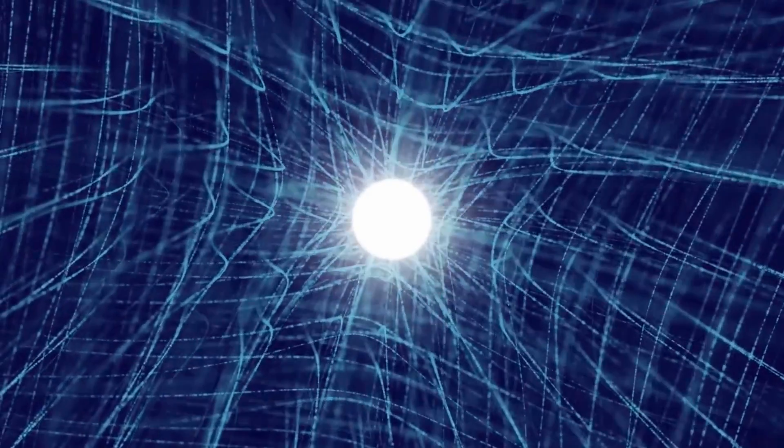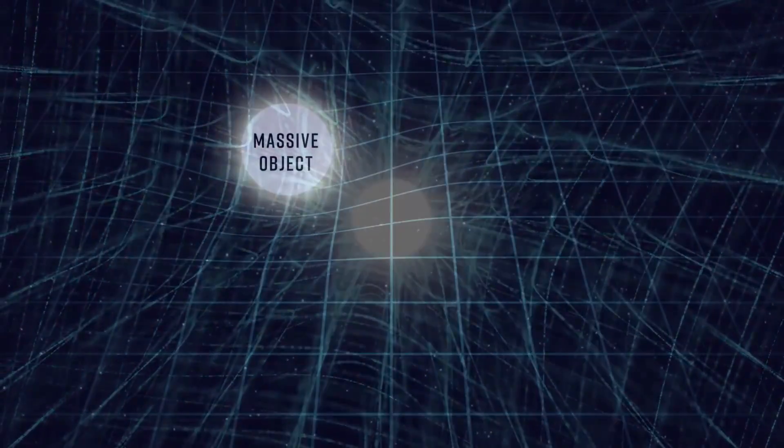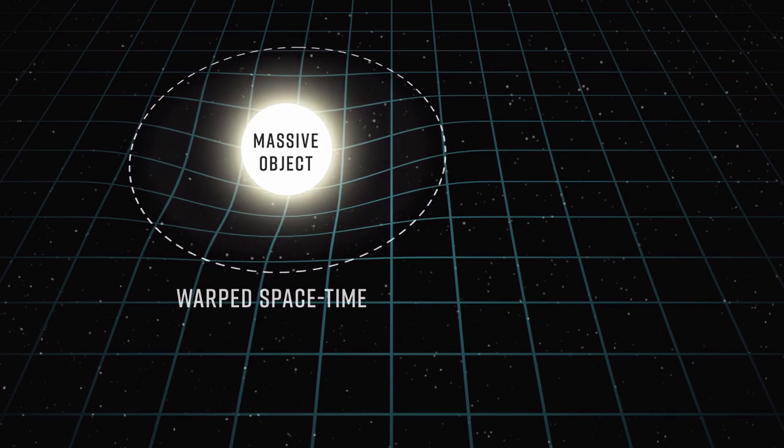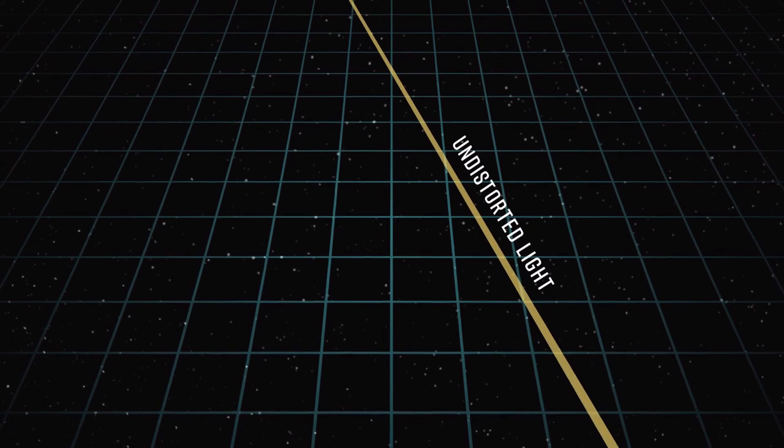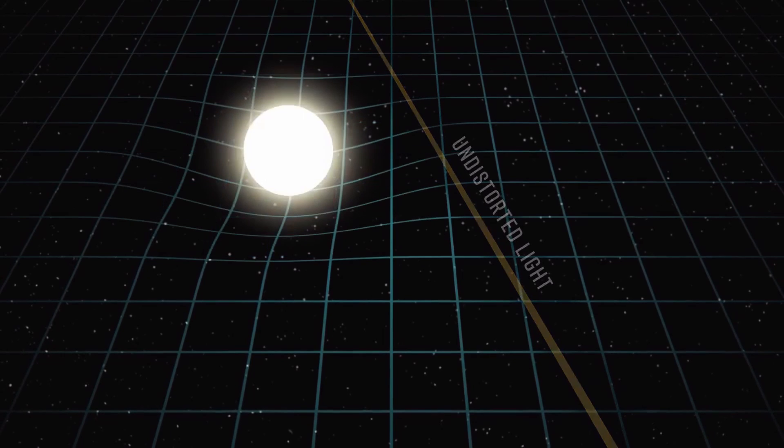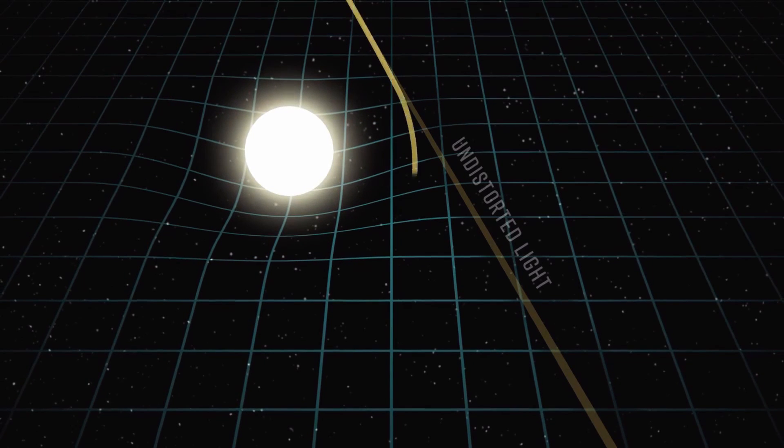Gravity is not a force, but actually a curvature of spacetime. Light will follow a straight line through spacetime, but when spacetime itself curves, so it will appear that the light also bends and curves.